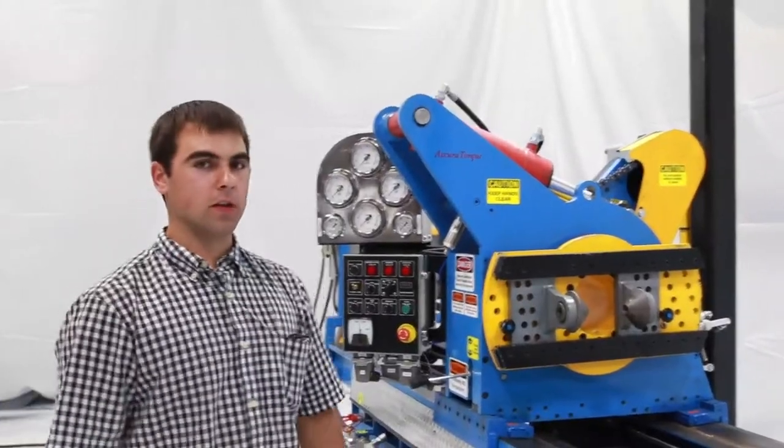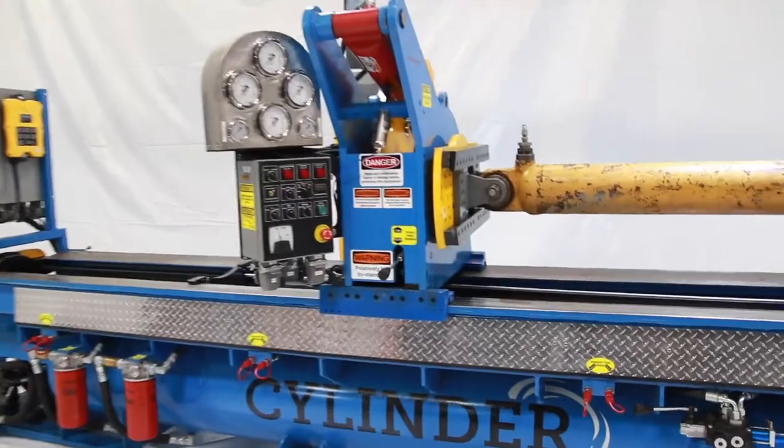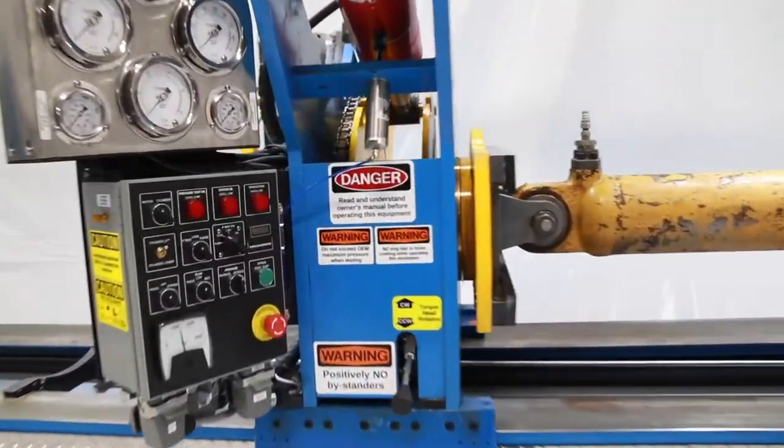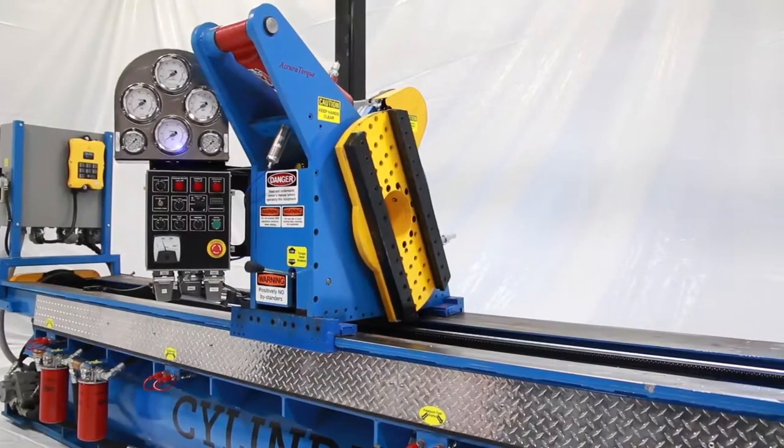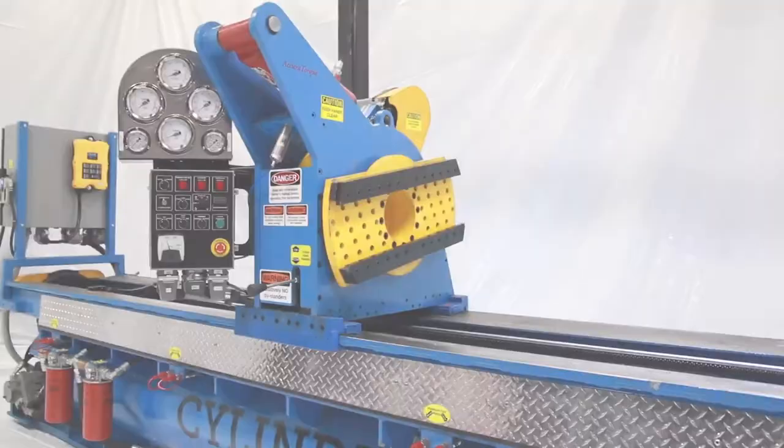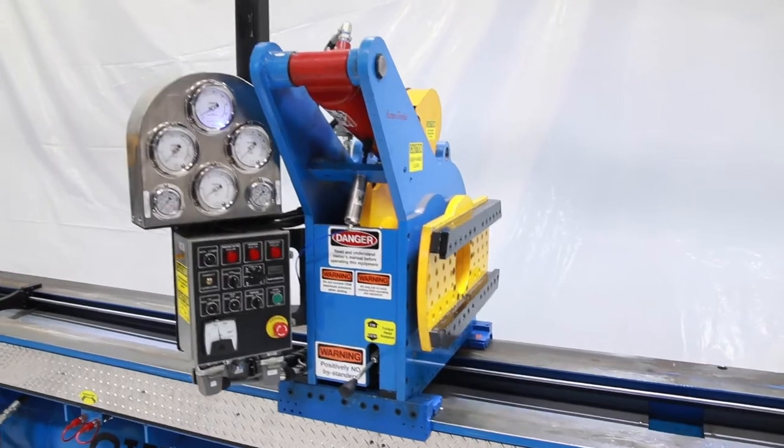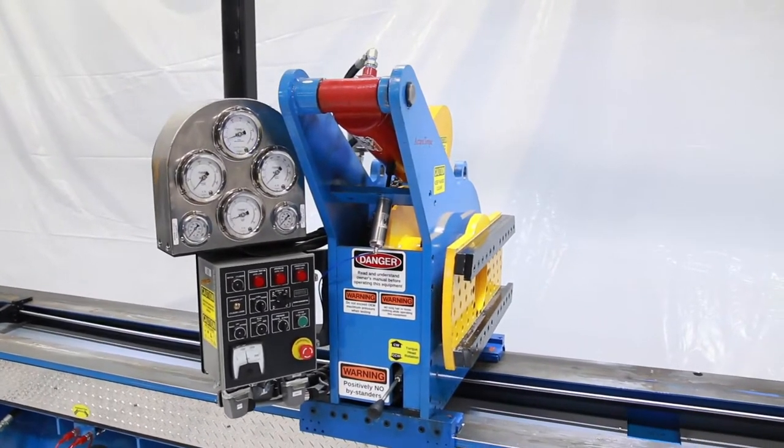Let's take a look at the headstock. The headstock is bi-directional rotation and that is controlled by two units. Number one, we've got the hydraulic pump. The pump produces 6,100 foot-pounds of torque.